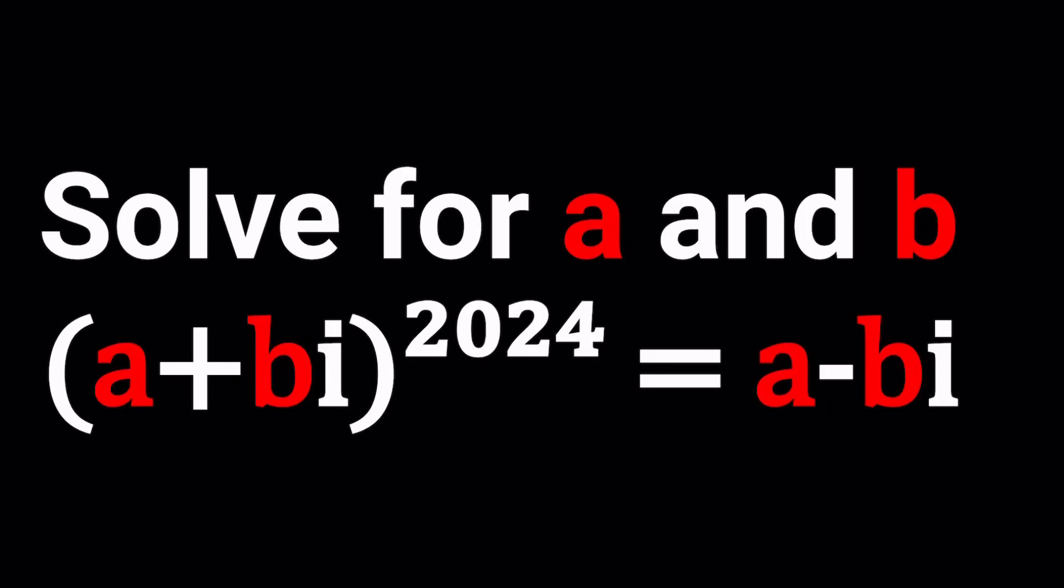This is all about complex numbers and in this video we're going to be solving a very complex equation. Literally. We have (a+bi)^2024, which is this year, right, we're still in November, and that is equal to a minus bi.